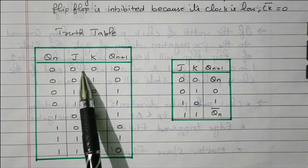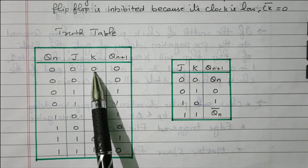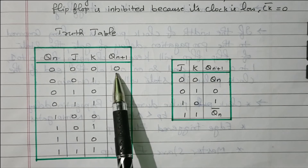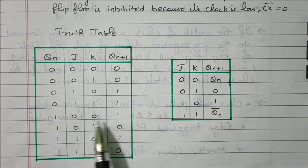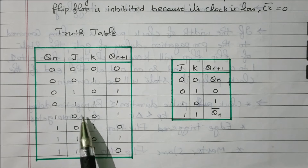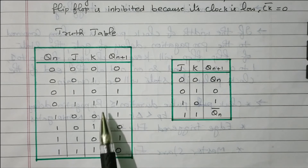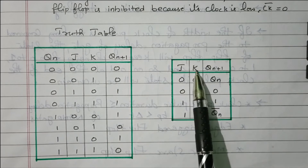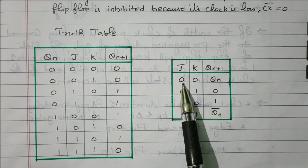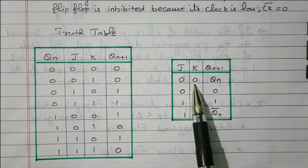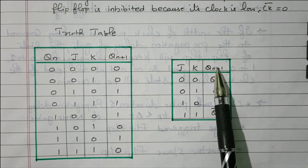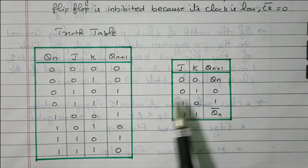If both J and K are 0, the present state and next state are the same — there is no change. If the present state is 0, the next state is 0; if it is 1, the next state is 1. So QN+1 equals QN: the next state is the previous state. There is no change.